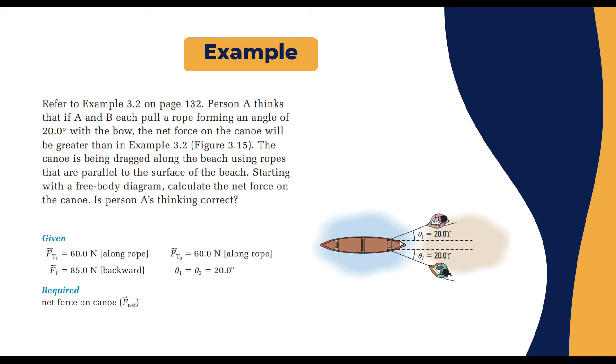So we have person A pulling with a force that is taking an angle of 20 degrees from the x-axis and person B is pulling with a force that's acting as minus 20 degrees or 20 degrees relative to the x-axis as well. So you're given that F₁ = 60 N along the rope, F₂ = 60 N along the rope as well, the friction force 85 newtons backward.